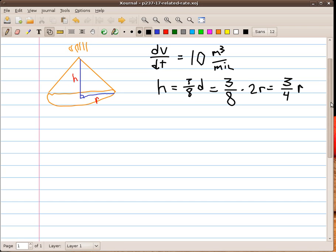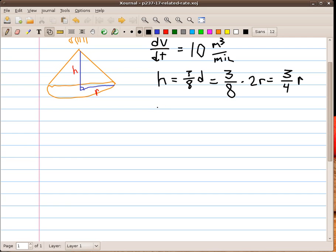Now since I already know the height, let's write the radius in terms of the height. They mentioned that the height is 4 meters at the time we're checking this. So the radius is 4 thirds of the height.